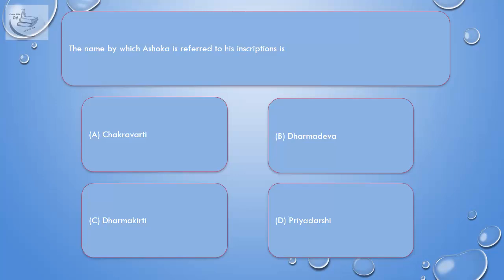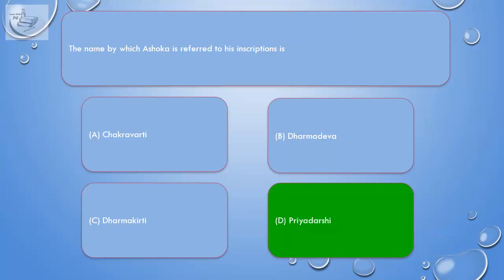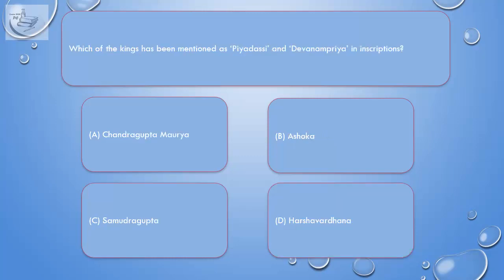Question: The name by which Ashoka is referred to in his inscriptions is: A. Chakravarti, B. Dharmadeva, C. Dharmakirti, D. Priyadarshi. Correct answer is D. Priyadarshi.